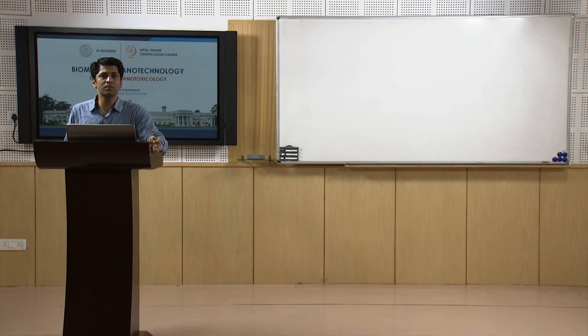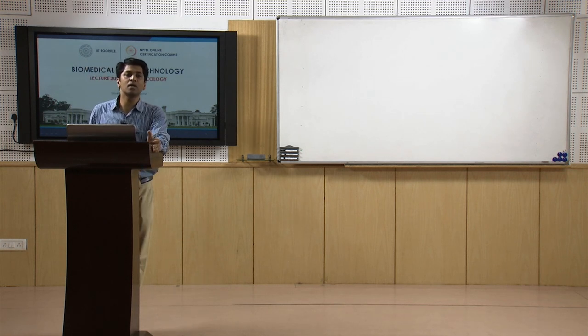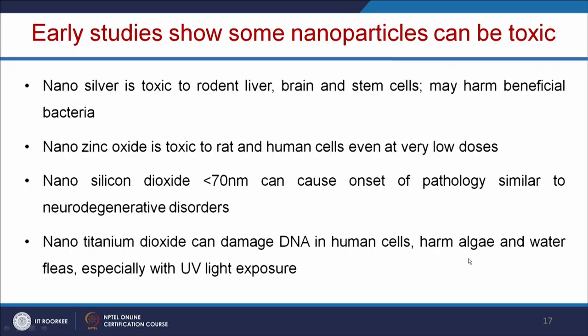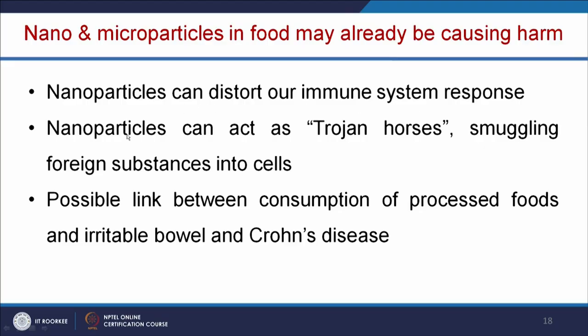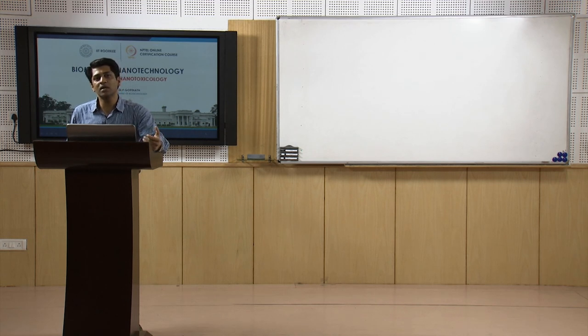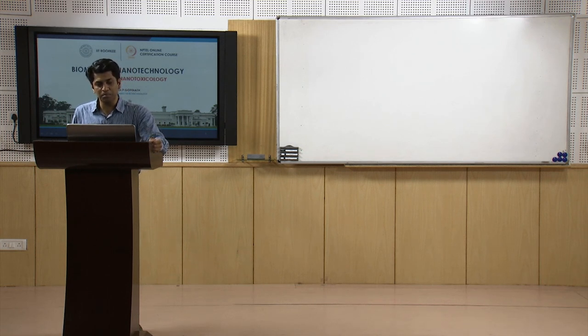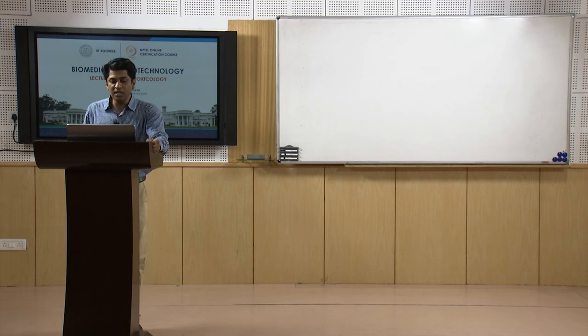Nano titanium dioxide can damage DNA in human cells and harm algae and water fleas, especially with UV light exposure. Titanium dioxide is present everywhere — in toothpaste, talcum powder — and when nano titanium dioxide goes into water bodies, it acts as a photocatalyst in the presence of sunlight and can harm algae and other living organisms. Nanoparticles can disrupt the immune system response and act like a Trojan horse — staying in the body for longer circulation time and suddenly causing new toxic effects. There is also a possible link between consumption of processed foods containing nano materials and irritable bowel and Crohn's disease.